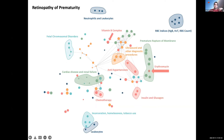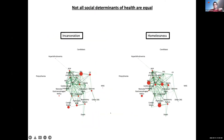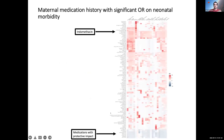We typically think of social determinants of health and socioeconomic status as one bucket, but they are not. Homelessness has a completely different effect on babies — particularly on necrotizing enterocolitis, a gut condition potentially linked to microbiome changes — whereas incarceration does not have that effect. You really have to dissect social determinants rather than treat them as one category. We can also find medications with protective or harmful effects on the baby.